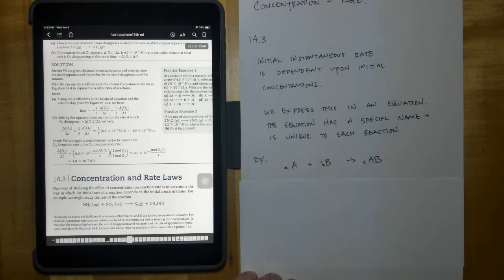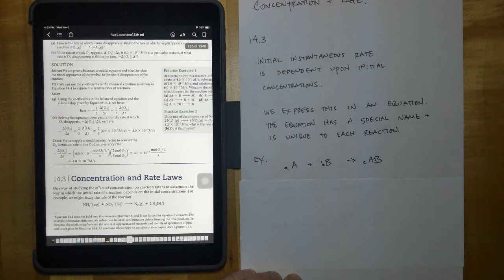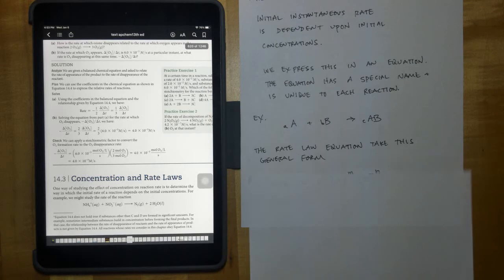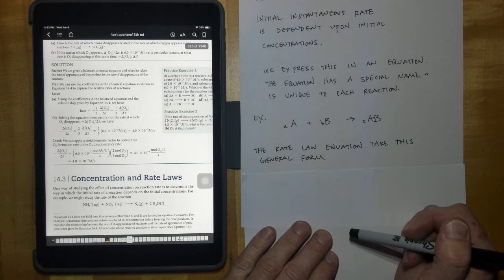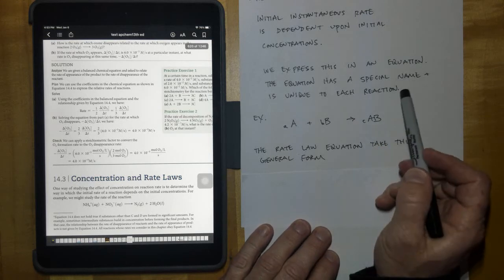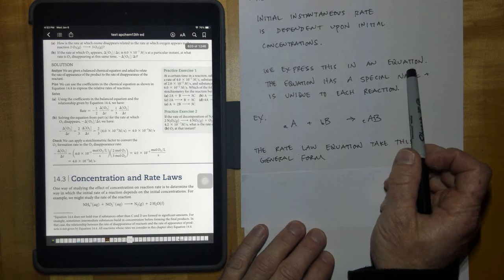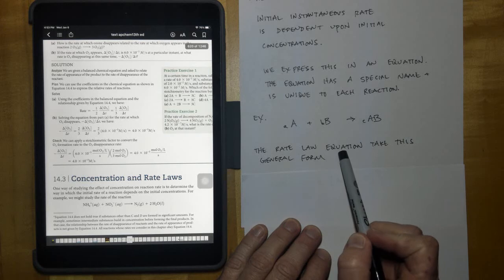Take, for example, this reaction, A plus B goes to AB. The little a, the little b, and the little c would be coefficients that might or might not be used in a particular reaction depending on what's needed to balance it. So the rate law equation takes this special form. The fancy name for the equation that tells you how fast a reaction is going to go is called the rate law equation.